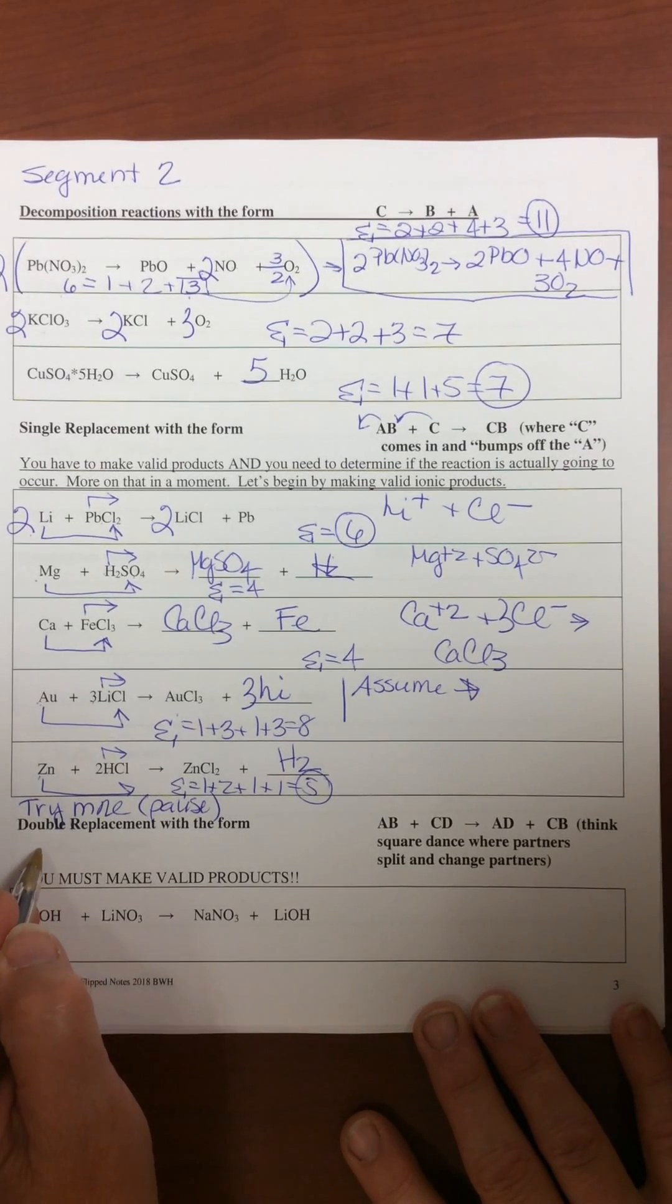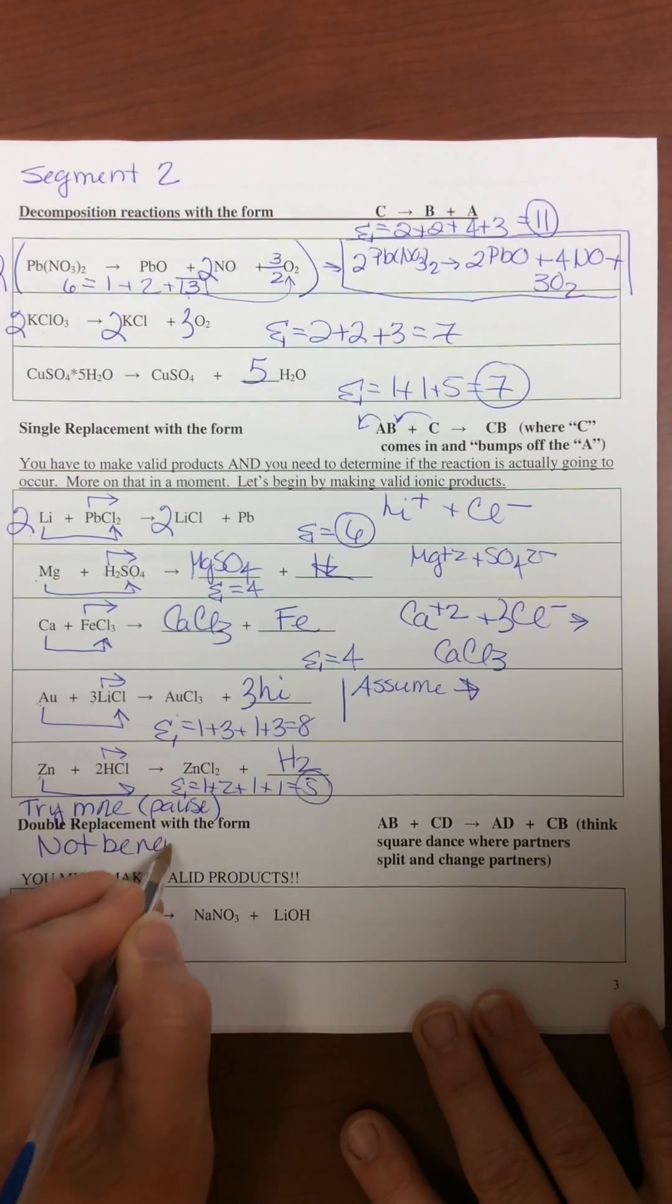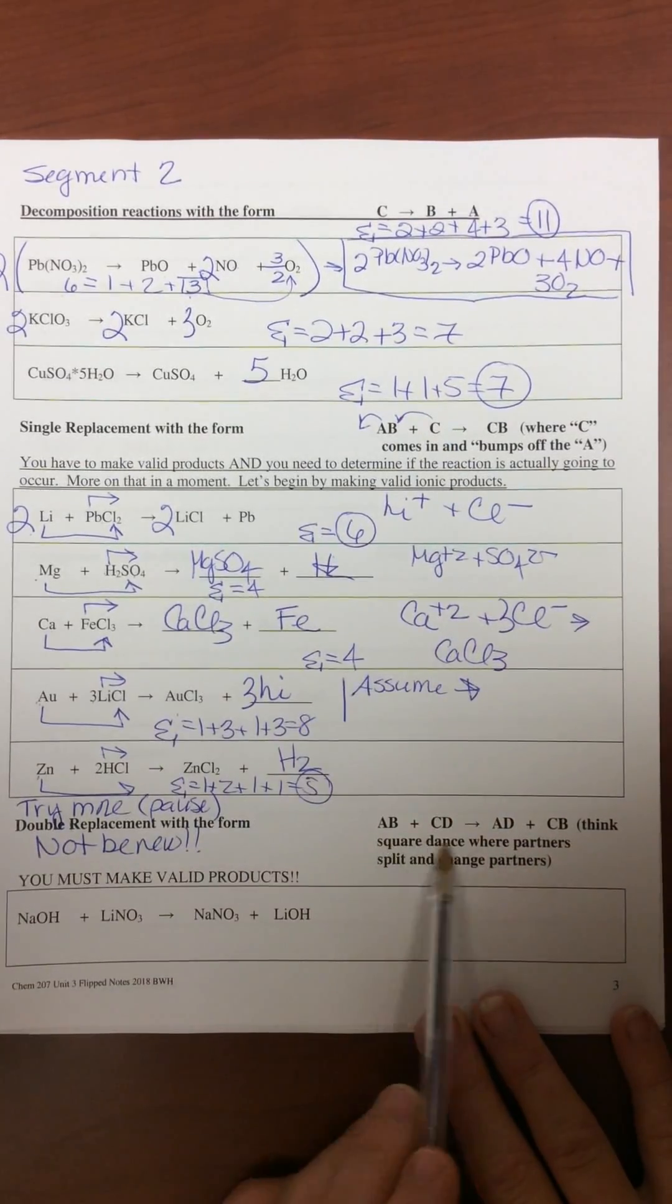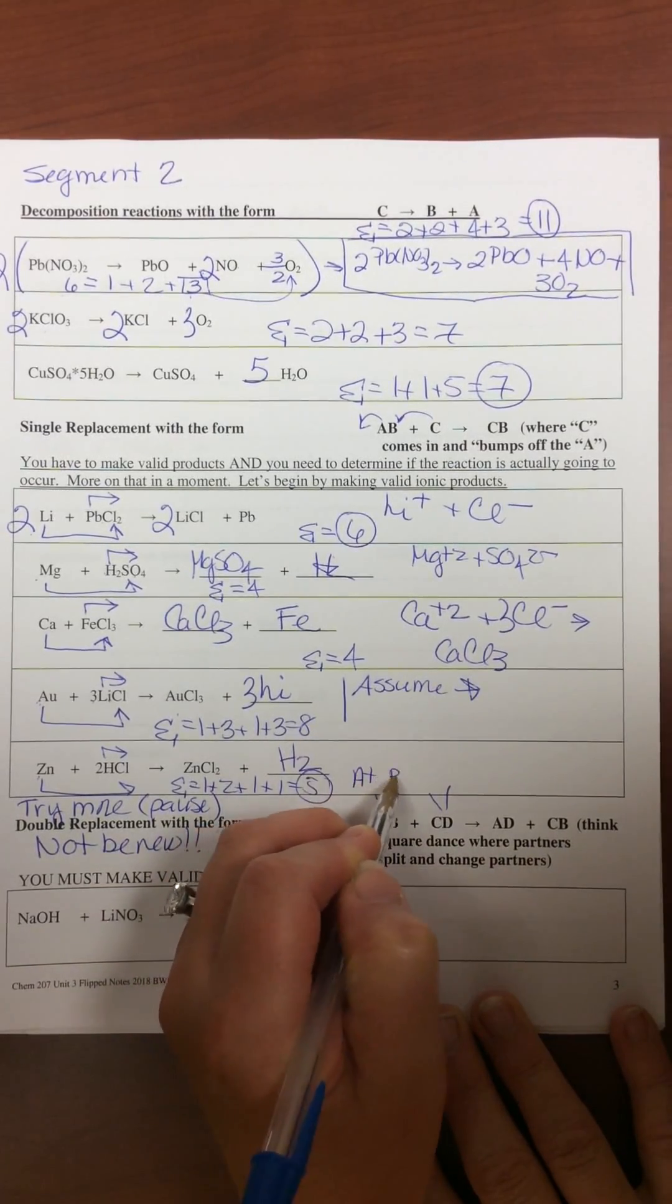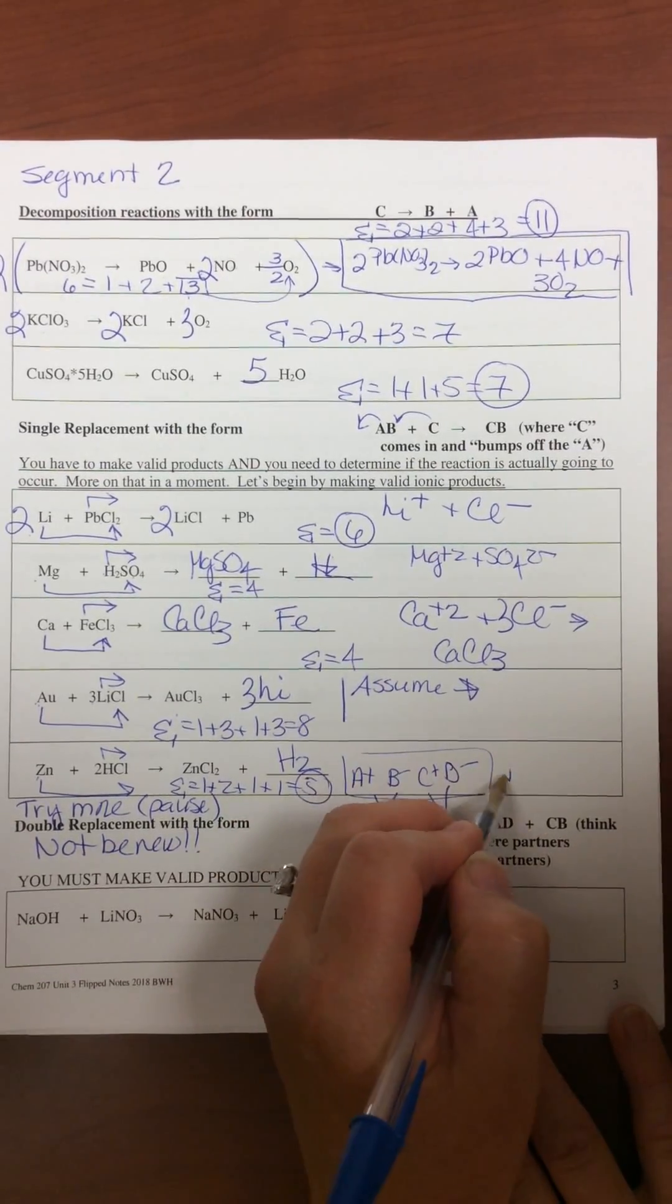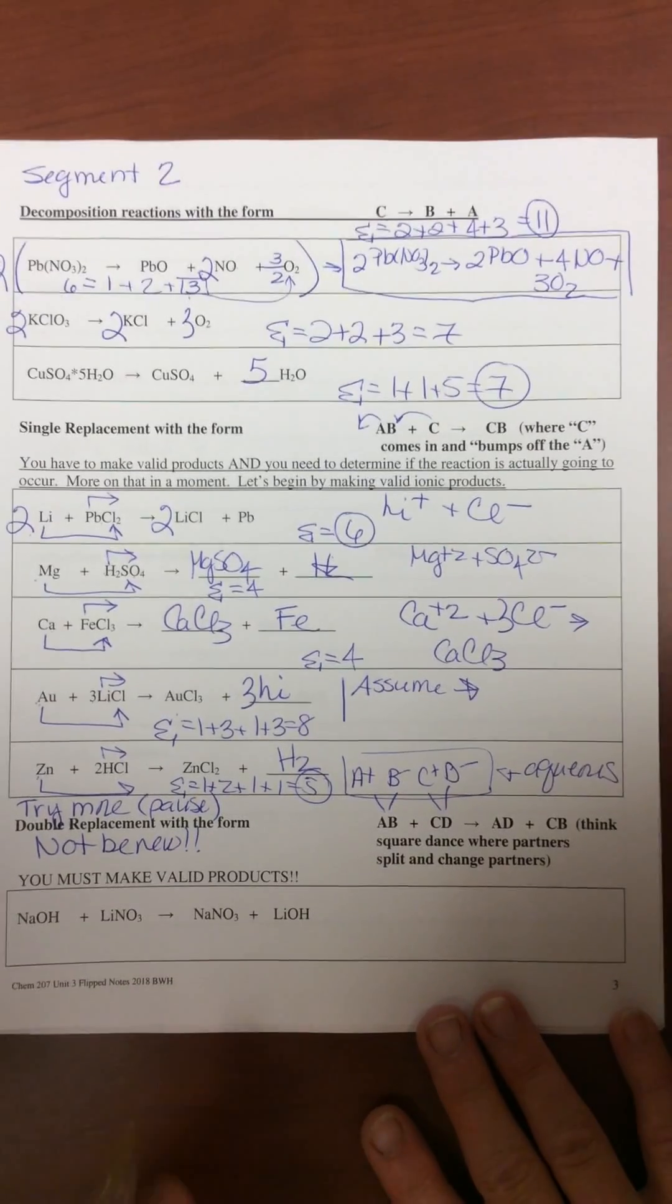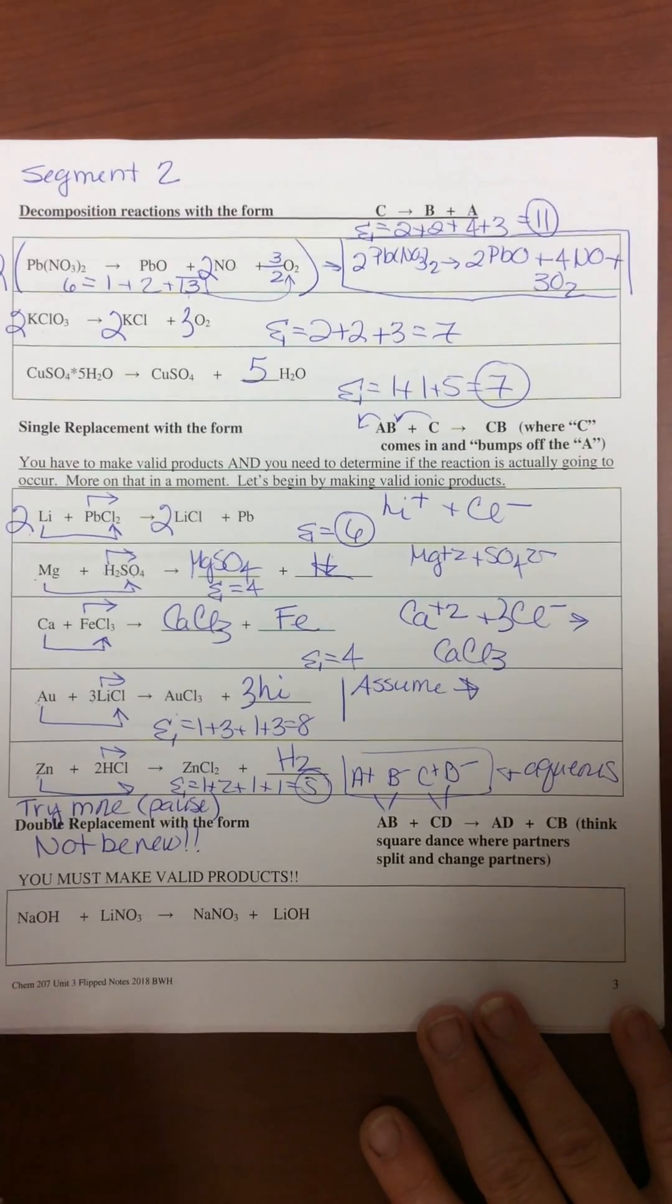Double replacement, you should have had a lot of practice with this before. This should not be new. Double replacement doesn't have a single one coming in. This is more like the square dance, where both products dissociate, which means these have to be aqueous. That's the only way they dissociate, is if they're aqueous and dissolved in water. So the first thing you have to do is identify it as double replacement, and the second thing you need to do is predict valid products.